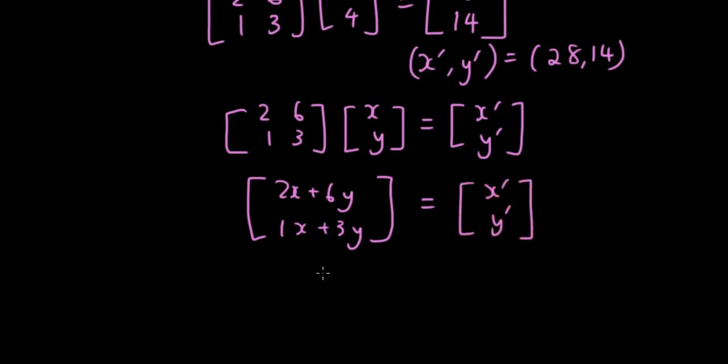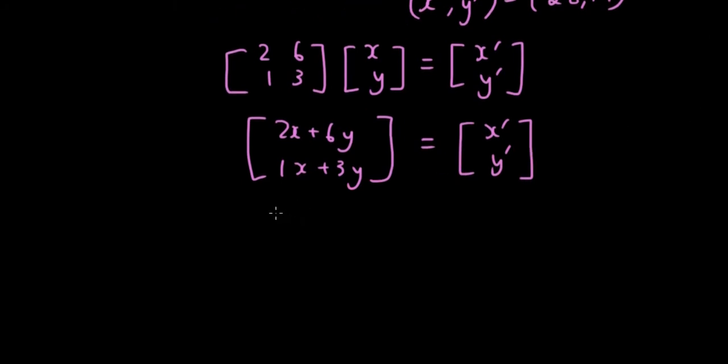And then if you write this out in a normal equation, you will get 2x plus 6y equals x', 1x plus 3y equals y'.